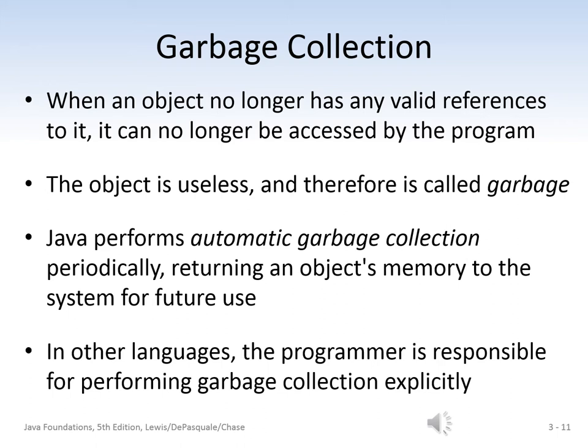Next, let's talk about garbage collection. Garbage occurs when an object can no longer be referenced — it no longer has any valid references and the program can't access it, so it becomes useless and is called garbage. Java performs automatic garbage collection. In other languages, the programmer is responsible for deallocating the memory that was previously allocated to an object. Java automatically returns the object's memory to the system — this is called automatic garbage collection.